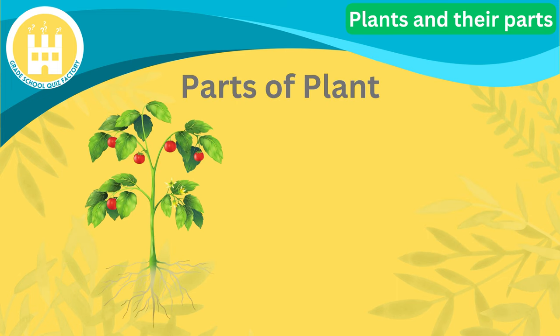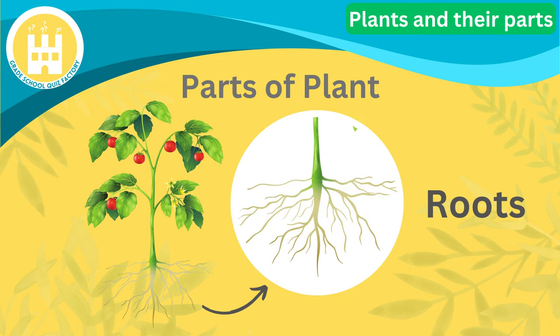Every plant has different parts that help them grow and stay alive. Let's learn about the main parts of a plant. First, roots. Just like our feet keep us grounded, roots keep plants firmly in the ground. They absorb water and nutrients from the soil, providing food for the plant.